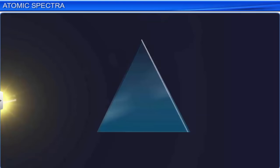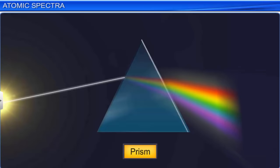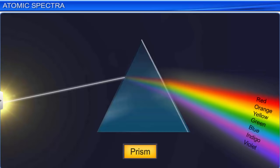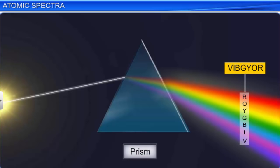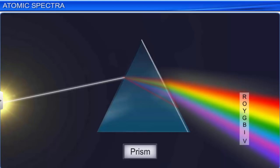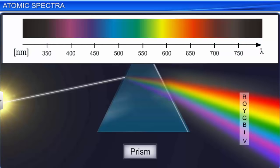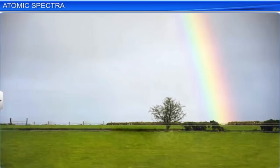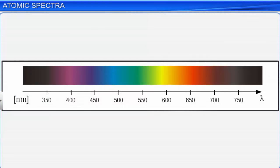When a ray of white light from the sun or an incandescent lamp is passed through a prism, it is dispersed into a continuous array of seven colors — namely, VIBGYOR. This is called a spectrum. The radiation with lower wavelength bends more than the radiation with higher wavelength. That is why we see violet (at 400 nanometers) at one end and red (at 700 nanometers) at the other end of the spectrum. The most common example of a spectrum visible to the naked eye is a rainbow. These colored bands merge into each other; therefore, the spectrum of ordinary white light is called a continuous spectrum.